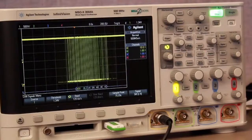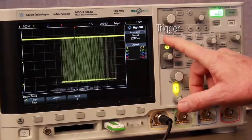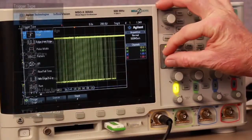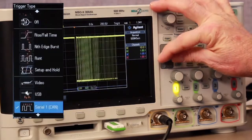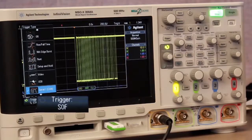To establish a more unique trigger condition, press the scope's front panel trigger key, then change from triggering on any edge crossing to triggering on CAN signals. The default CAN trigger condition is to trigger on the start of any frame.